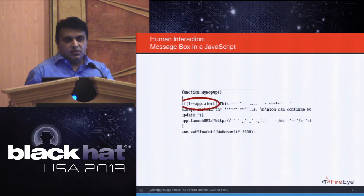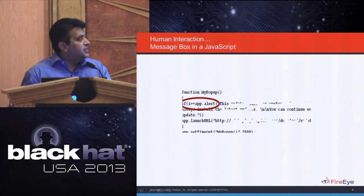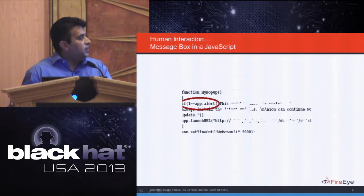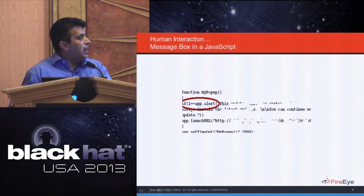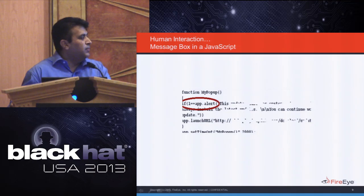Besides hooking to mouse events, Windows executables have also been seen using the MessageBoxEx API to create dialog boxes. Only when these dialog boxes are clicked does malicious activity take place. This human interaction evasion is not limited to Windows executables — it is also seen in PDF files, where the app.alert API pops up a dialog box and malicious activity only triggers when it is clicked.